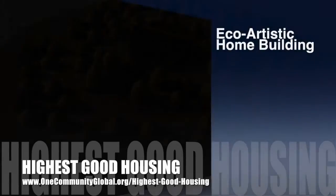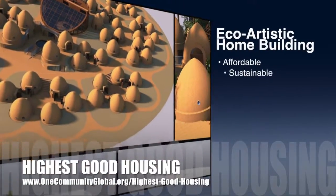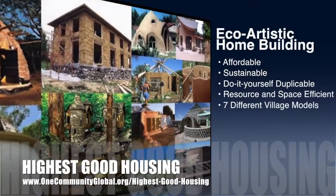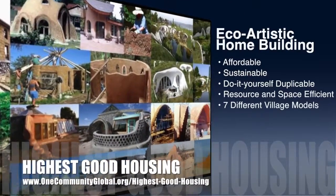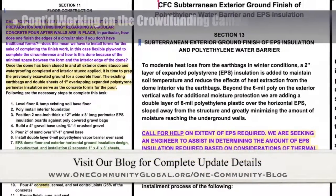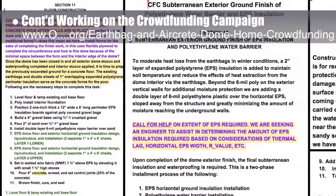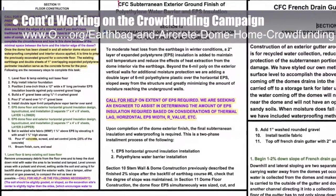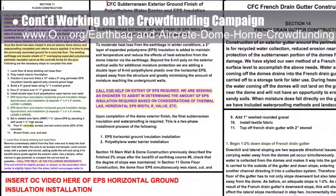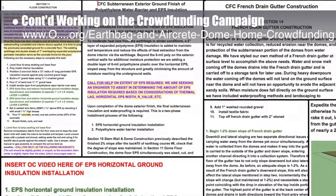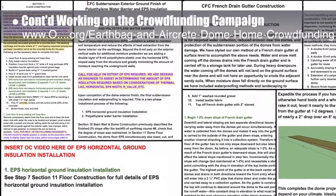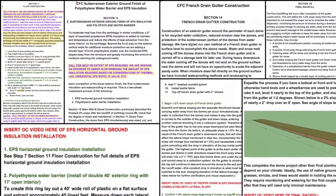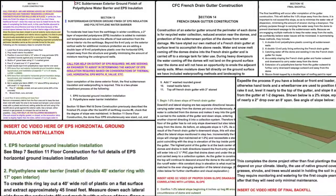One Community's approach to Highest Good Housing is eco-artistic home building that is affordable, sustainable, do-it-yourself duplicable, resource and space efficient, and consists of seven different sustainably constructed village models. The core team, working with Ashwini Ramesh, civil engineer and project manager, put another combined total of 10 hours into the crowdfunding campaign. This week's focus was editing the excavation and construction of an earthbag dome Google Doc, focusing on floor construction section 11, the subterranean exterior ground finish polyethylene water barrier and EPS insulation section 13, the French drain gutter section 14, and the final backfill.